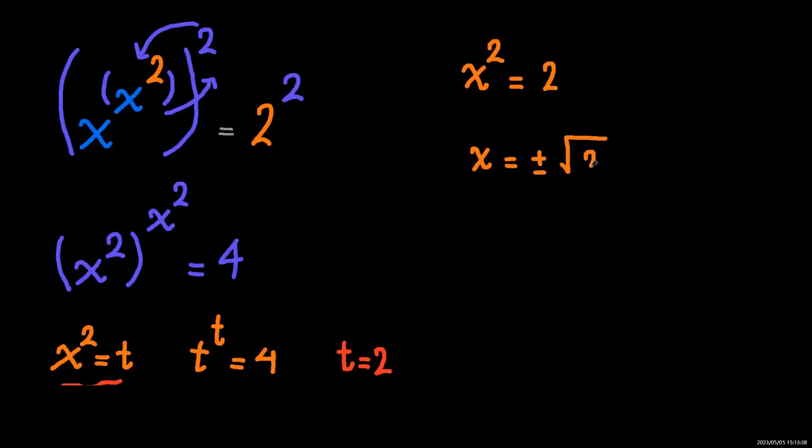Now we know x squared equals 2, and we're going to have two solutions: positive and negative square roots of 2. I hope you found the video useful. If you like the video, don't go without a like.